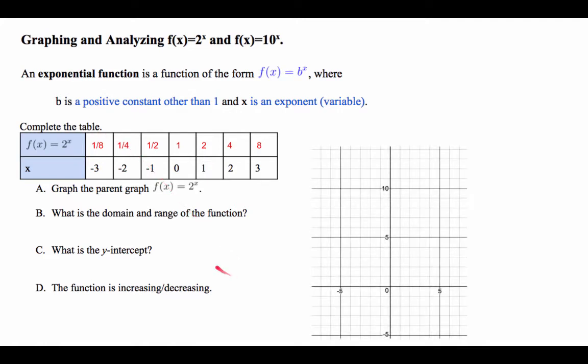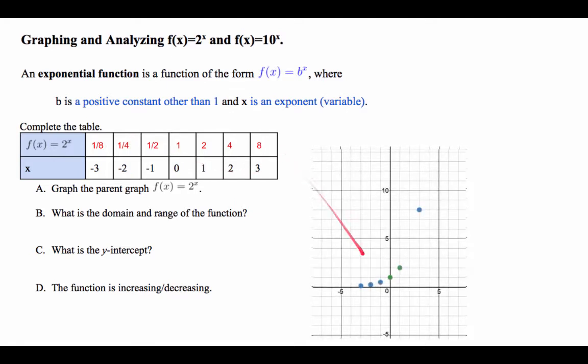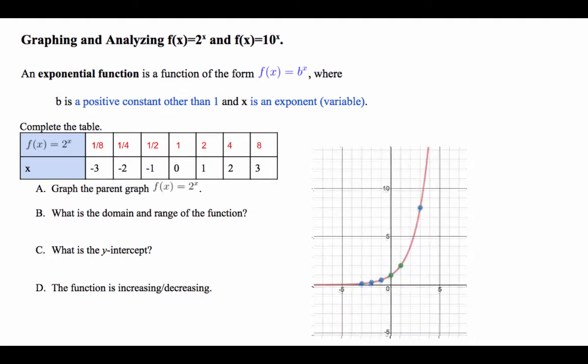On your graph, please plot these points. So you got (-3, 1/8), (-2, 1/4), all the way to (3, 8). When you do that, that's the shape that we get. The 2 in green are the 2 points that we need to use as a reference point at all times. I did what's in blue as the extra that I did to help me draw a curve.